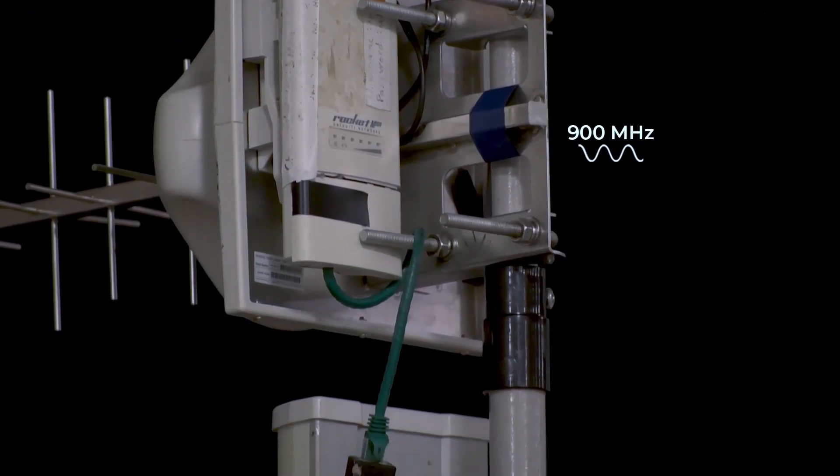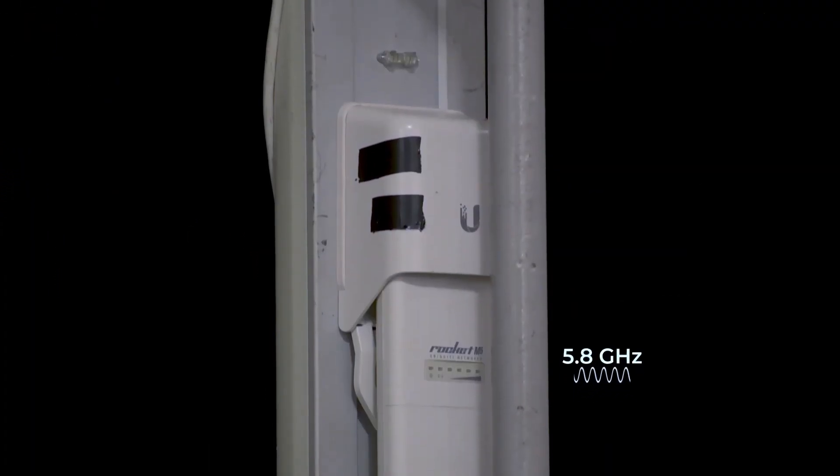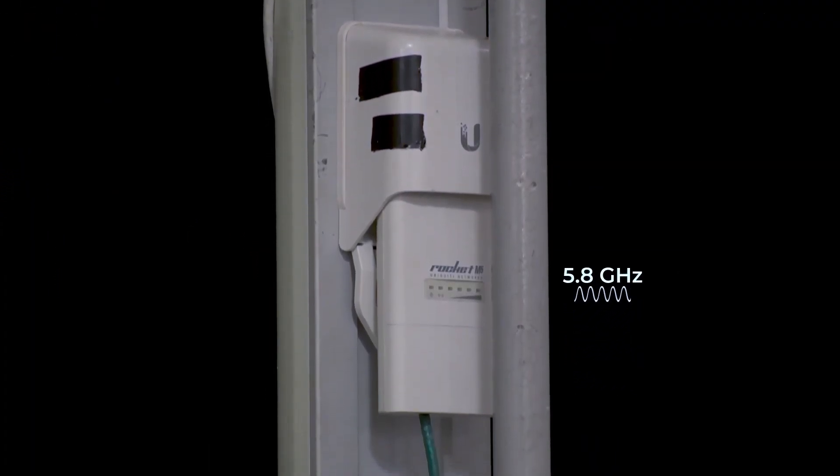Commands, telemetry, and video feeds are sent over the network using one of two radio stacks: a 900 MHz antenna for reliable long-range, low-bandwidth applications, and a 5 GHz antenna for short-range, high-bandwidth applications.